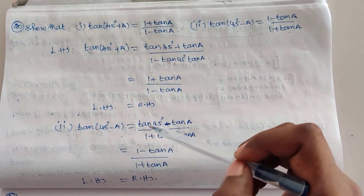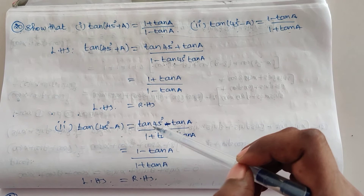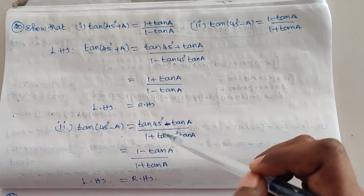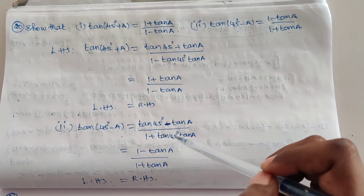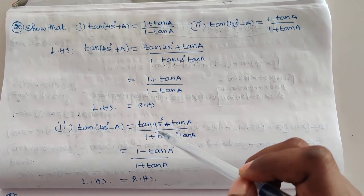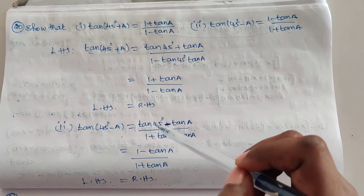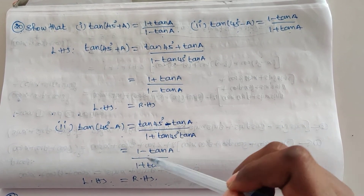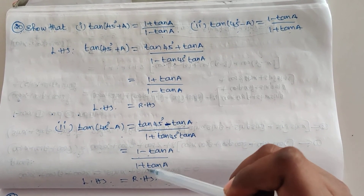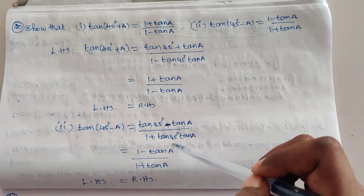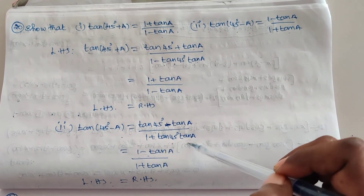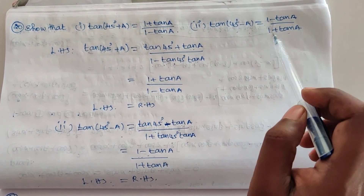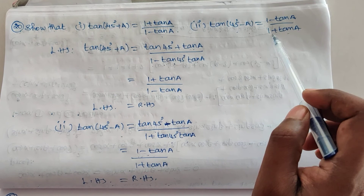This is in the form of tan(A - B), where tan(A - B) = (tan A - tan B) / (1 + tan A tan B). Substituting tan 45° = 1: (1 - tan a) / (1 + 1·tan a) = (1 - tan a) / (1 + tan a). That is our second proof.